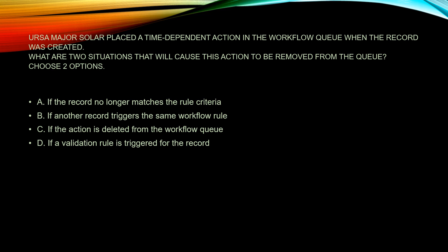So let's start with the top one. We're looking for things that would make it no longer part of the queue — gets removed from the queue. Why would it be kicked out? If the record no longer matches the rule criteria, it would be kicked out. So A is a pretty good answer, so we need to find another one.